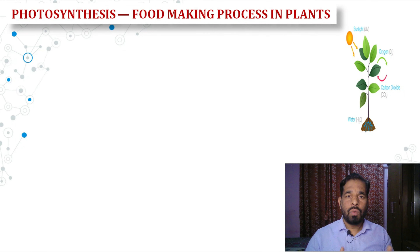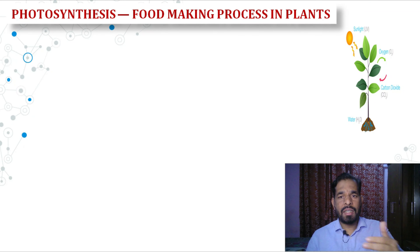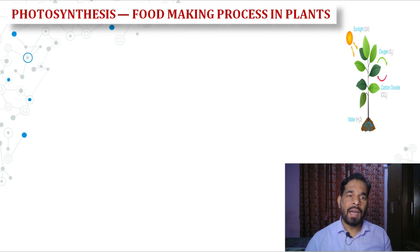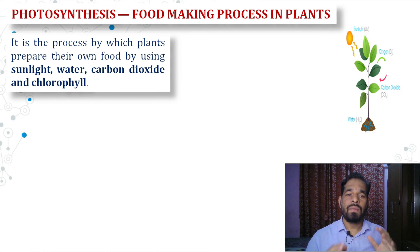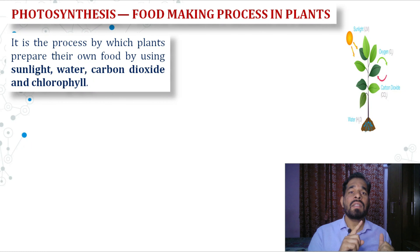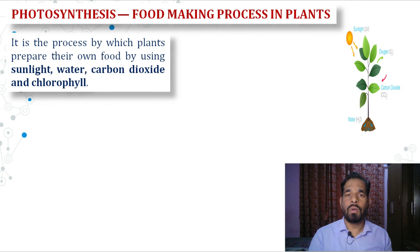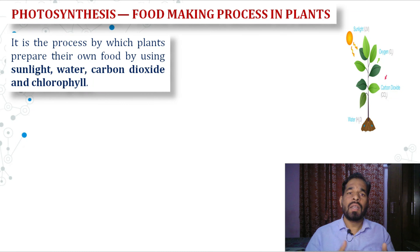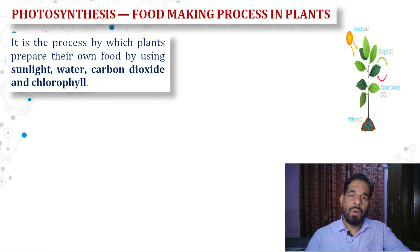How do plants make food? It is a very interesting process. The food-making process in plants is called photosynthesis. For photosynthesis there are a few requirements. Plants produce their food using different things: sunlight, water, carbon dioxide, and chlorophyll. Using all these things, plants produce energy or food in the form of carbohydrates.